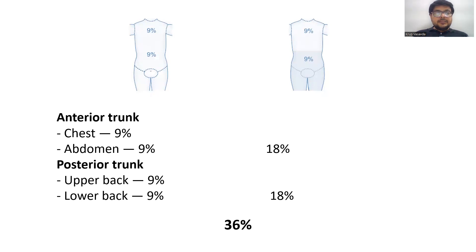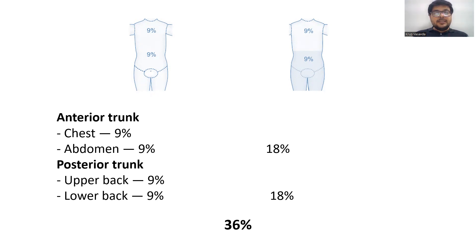Anterior trunk: chest is 9% and if the abdomen is also involved, that is another 9%. Posterior trunk: upper back is 9% and lower back is 9%. So the anterior side is 18% and the posterior side is also 18%, giving a total of 36% for the trunk.